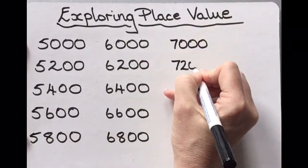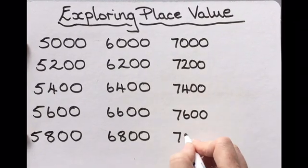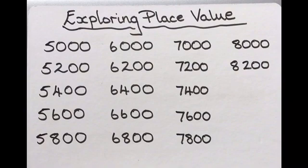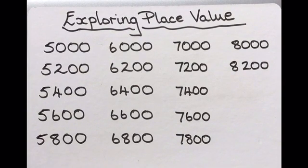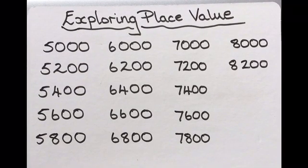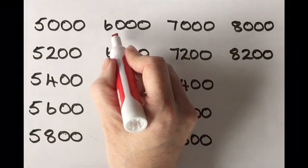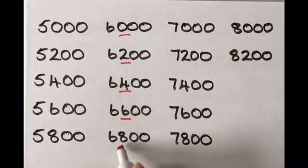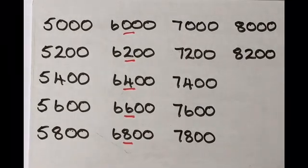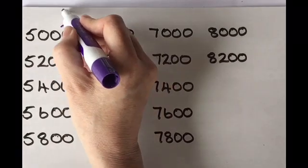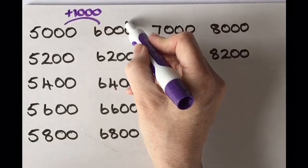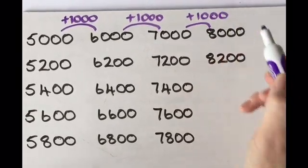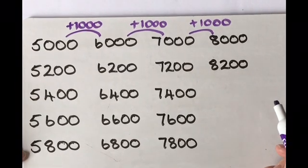Please remember that effective questioning is key — not only to discuss what the patterns are but also why they occur. Choral counting allows all learners to participate regardless of their level of understanding. One learner saw a pattern in the hundreds column: 0, 2, 4, 6, 8 — stating that it was just like counting up in twos, although they were counting in two hundreds, and the pattern happened in every column. Many children noticed that the first number in each column increased by 1000 each time. When asked why, learners noted that there were five numbers in the previous column increasing by 200 each time, so five lots of 200 are 1000.